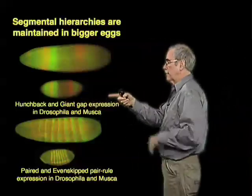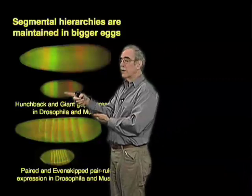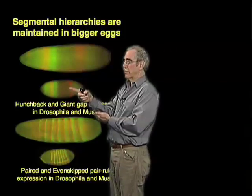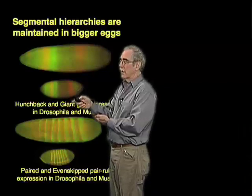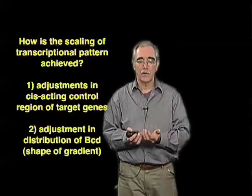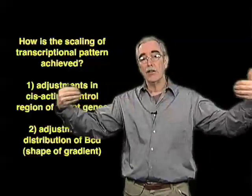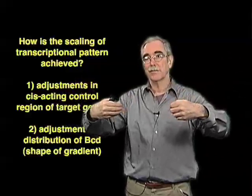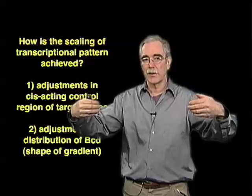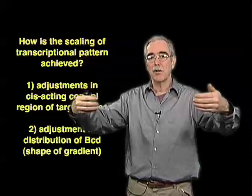These are transcriptional responses — genes which are transcribed at the blastoderm stage directly or indirectly in response to the bicoid gradient. And so the question you'd like to ask is: how is it, during the course of evolution, as egg size changes, that the embryo or the species adjusts to using a bicoid gradient to establish pattern?